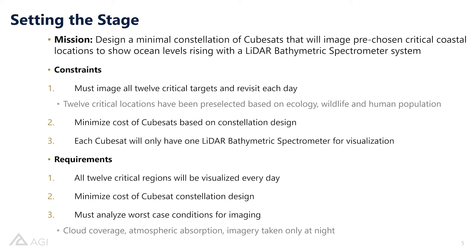We will have three requirements that we return to throughout this presentation. First, all 12 critical regions need to be visualized and revisited at least every day. Second, we need to minimize the cost of the CubeSat constellation design. Third, we need to analyze the worst case conditions, which will allow us to analyze every phase of the mission lifecycle — inclusive of cloud coverage, atmospheric absorption, and the fact that imagery may only be taken at night.